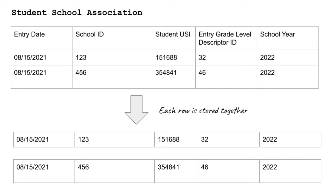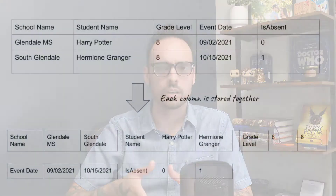Google BigQuery is a great option both because it's a columnar store and because of its deep integration with Google Data Studio. Let's talk about row and column store databases. The EdFi ODS runs on Postgres and SQL Server, and both are record-based storage databases. When you think about row-based databases, those databases are storing each row together on disk, and that's what we want for a transactional operational data store because we're retrieving or updating full rows of data.